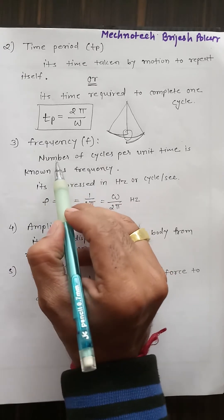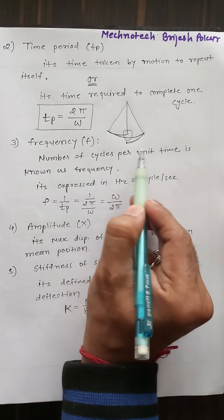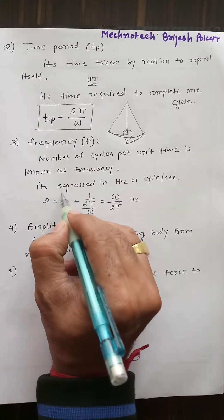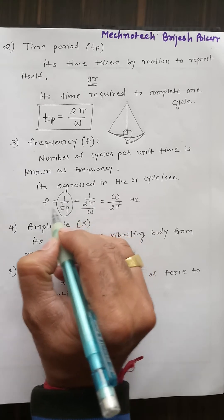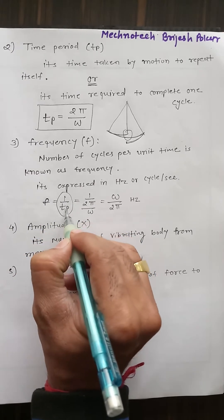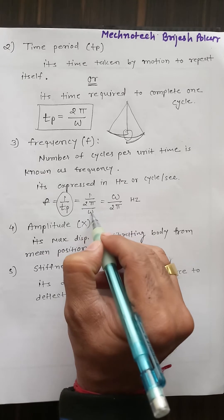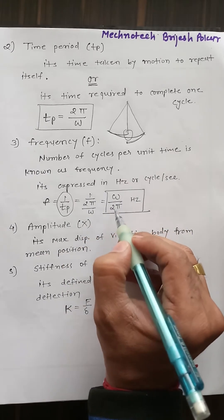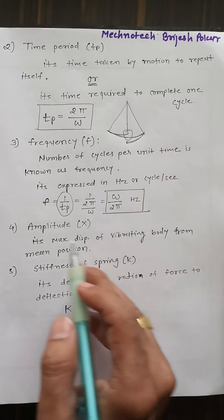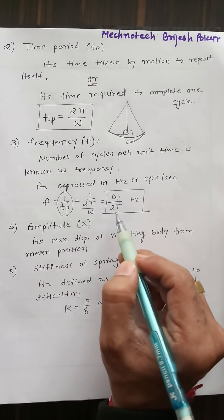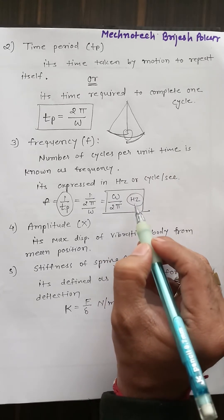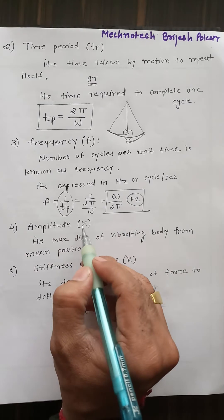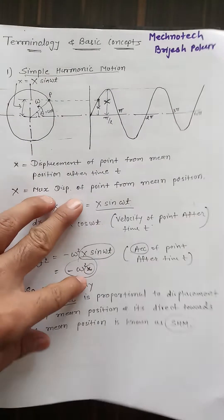Next is frequency. The number of cycles per unit time is known as frequency. It is the inverse of the time period, so frequency f = 1/Tp = 1/(2π/ω) = ω/(2π). Frequency is denoted in hertz (Hz).